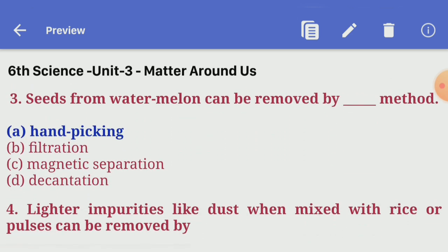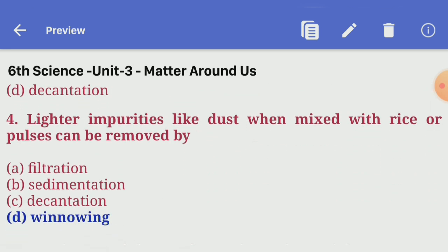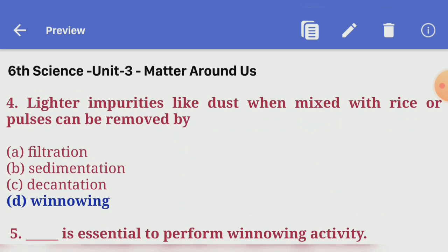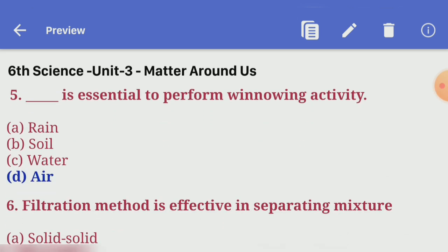Third one: seeds from watermelon can be removed by the dash method. Answer A — hand picking. Fourth one: lighter impurities like dust, when mixed with rice or pulses, can be removed by answer D — winnowing. Fifth one: dash is essential to perform winnowing activity. Answer D — air.